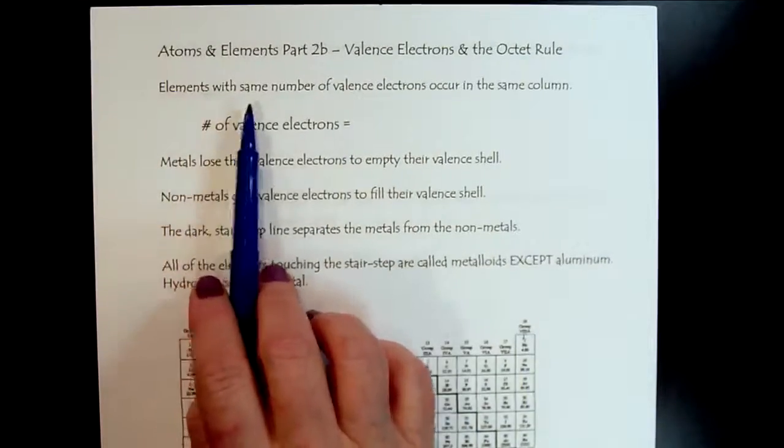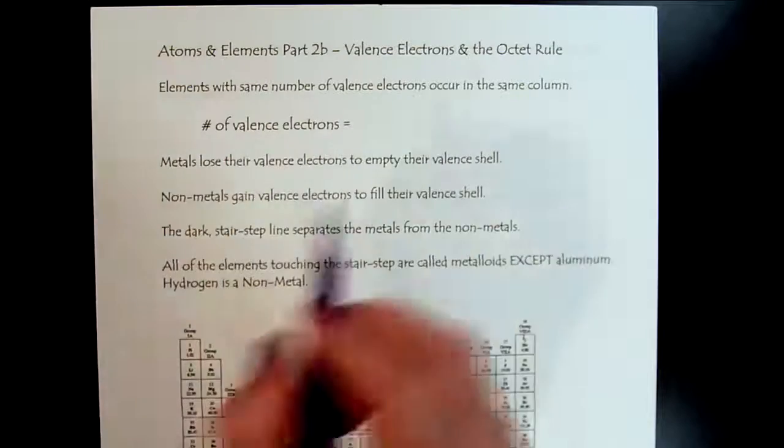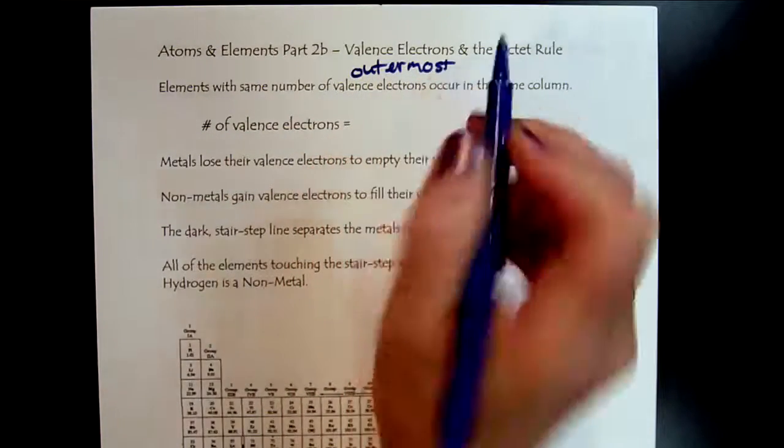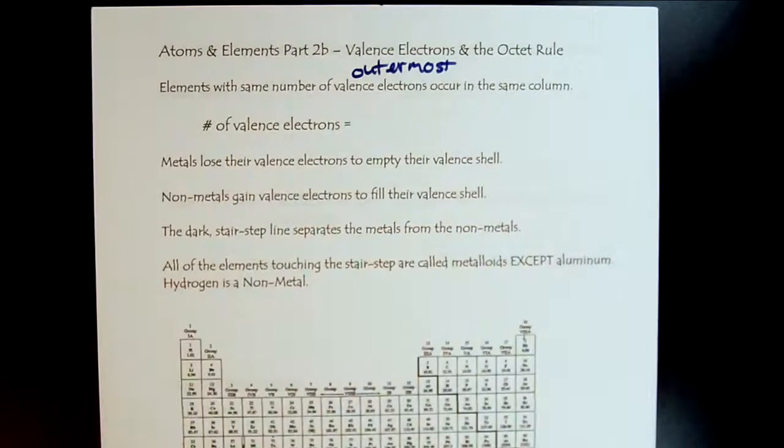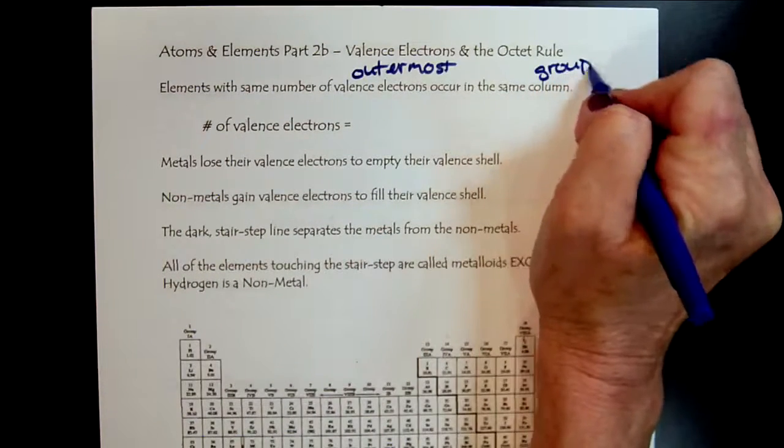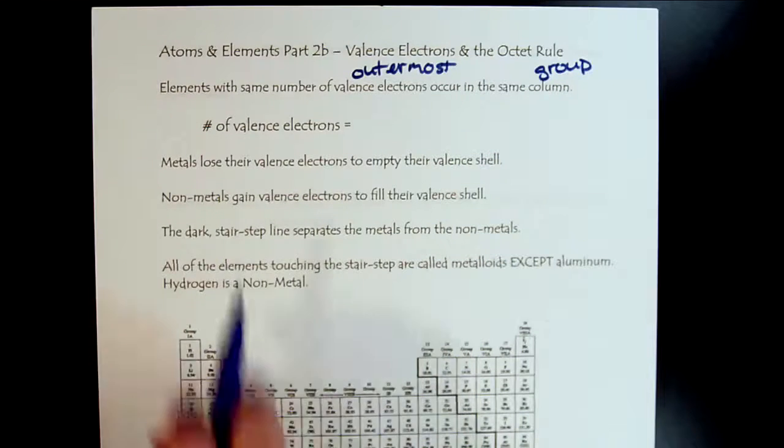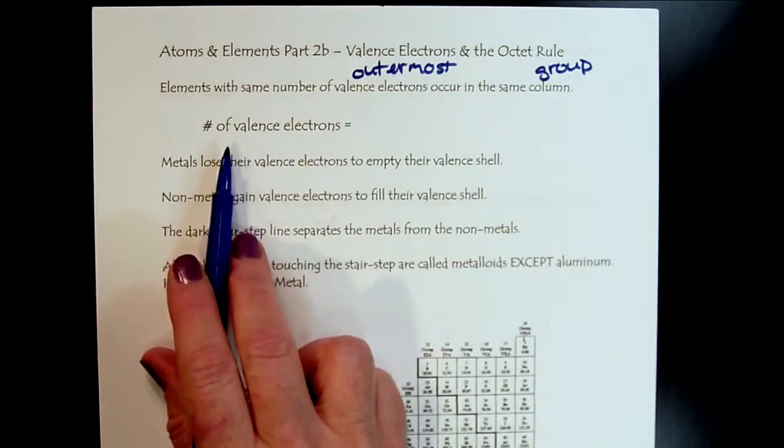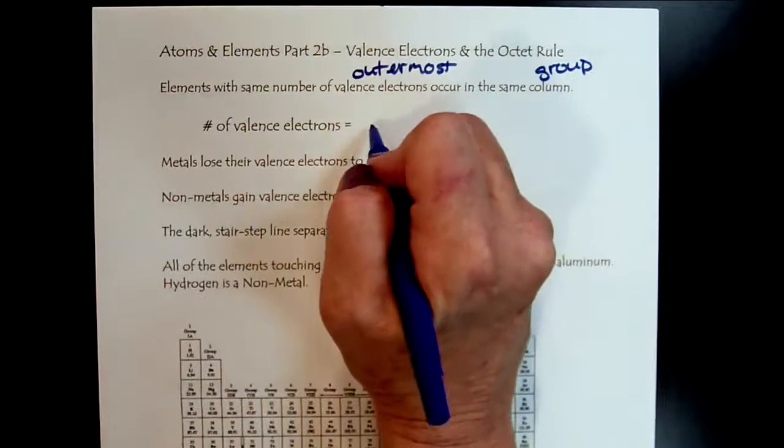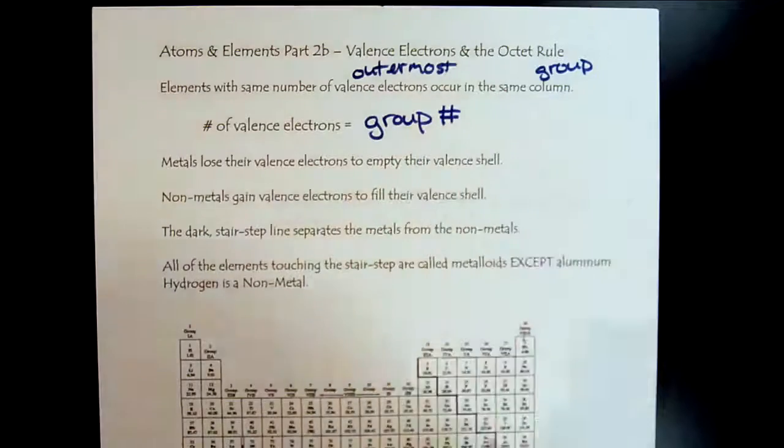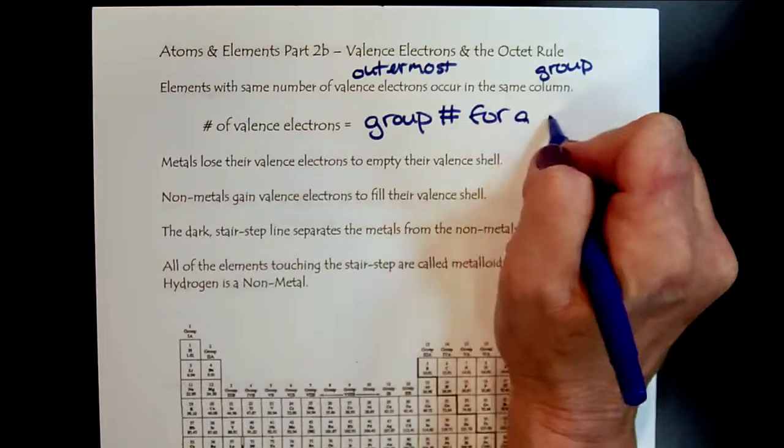Elements with the same number of valence electrons, and remember that means outermost, occur in the same column. The name of a column is the group. This makes it really handy when we're looking at the periodic table.